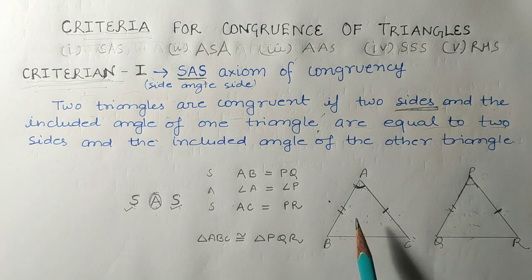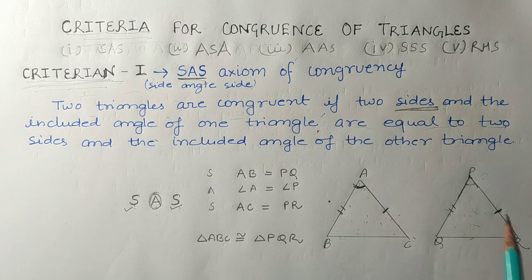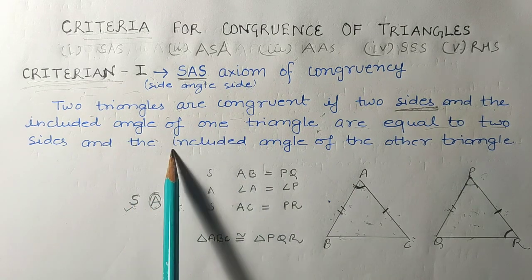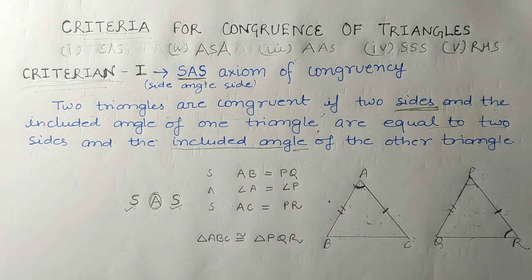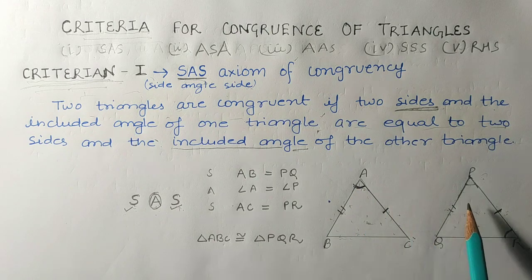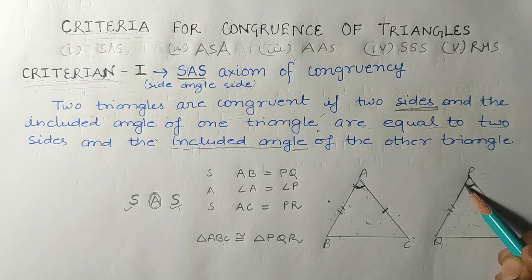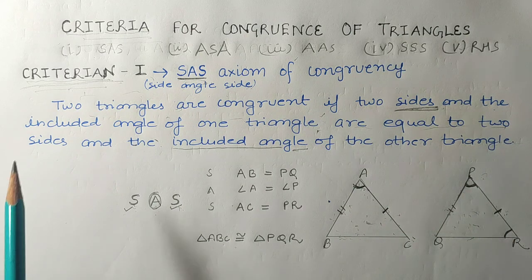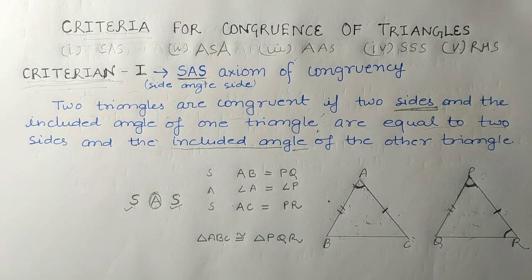Suppose angle A is equal to angle R instead of angle P. Even though two sides are equal, we cannot say the triangles are congruent, because the definition requires the included angle — the angle included by the two sides. Angle A is included by sides AB and AC, and angle P is included by sides PQ and PR.